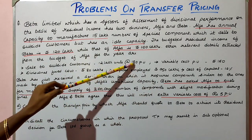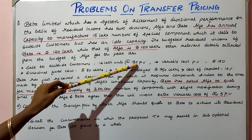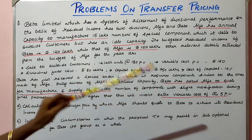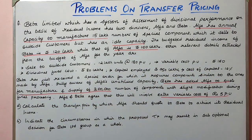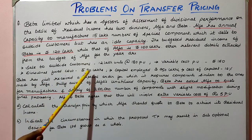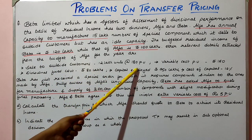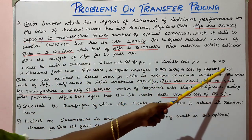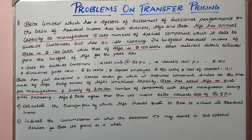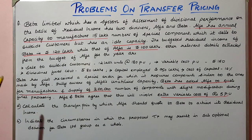The selling price per unit is 180, the variable cost per unit is 160, the divisional fixed cost is 80 lakhs, capital employed is 750, and the cost of capital is 12 percent.